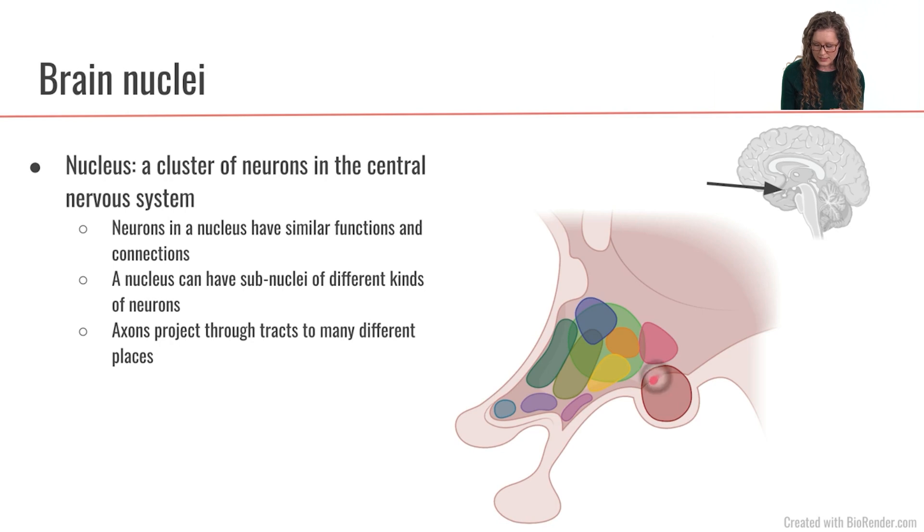These pictures here are looking at the hypothalamus and showing us several different nuclei within the hypothalamus. So the neurons that are living in these different nuclei, they're going to have similar functions and they will be sending signals to similar places.